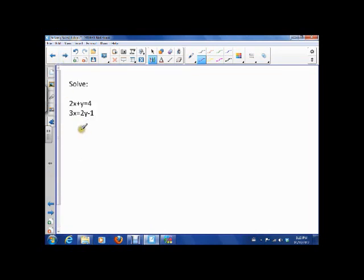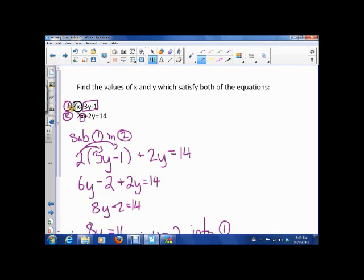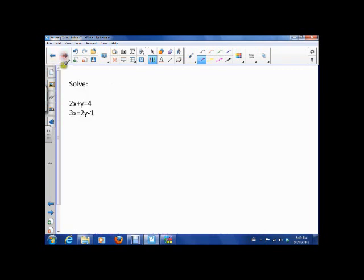So in this one, notice the difference between the two examples. Here x is isolated. Here we don't have anything isolated. I've got 3x, but that's not good enough.